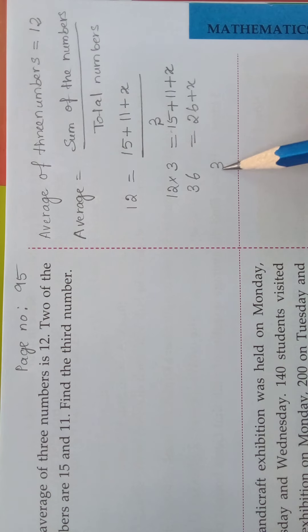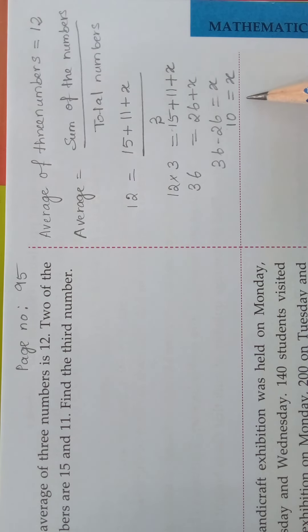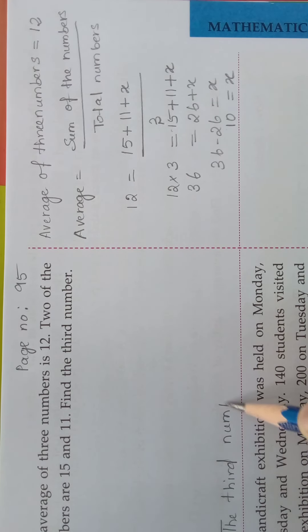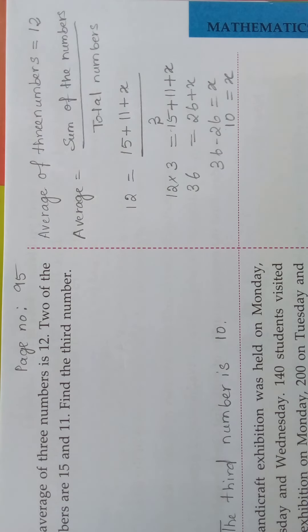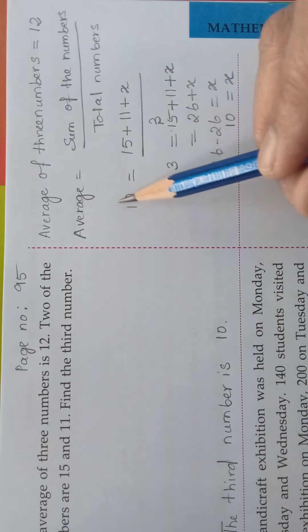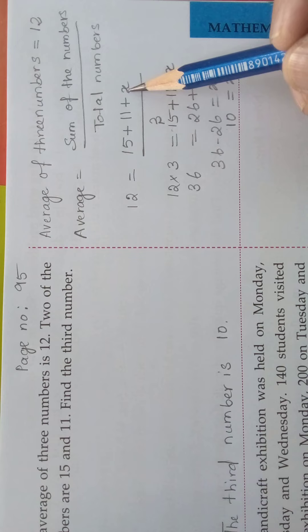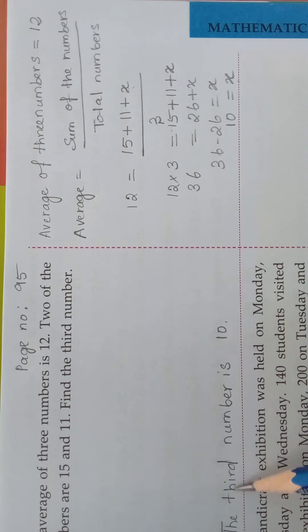We want x now. So 36 minus 26 equals x. 36 minus 26 equals 10. So what is x? What is the third number? 10. The third number is 10.